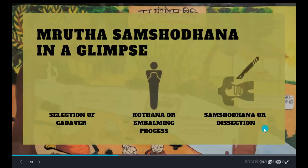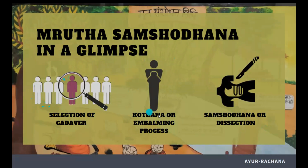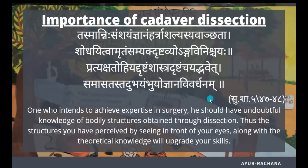Let's have a glimpse into the Mridha Samshodhana Vidi. We have a selection criteria to select the ideal cadaver that has to be dissected, a process of kodhana — that is the embalming or preservation process followed during that time — and we will see how the dissection was done in the previous era. The first topic is the importance of cadaveric dissection.